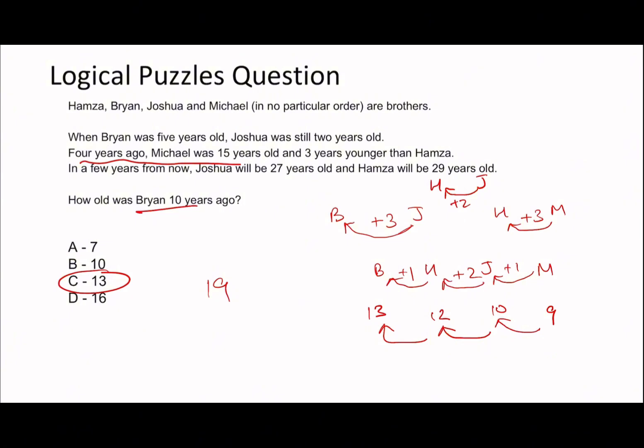With logical puzzles where there isn't an immediate method — when it's not a two-way table question — you have to be logical with the information. Ask yourself: why have they given us this fact? For example, saying 'in a few years Joshua will be 27 and Hamza will be 29' seems useless if you don't know how many years in the future — but they gave it to you so you can relate Joshua to Hamza.